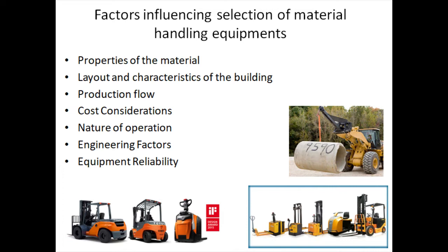Layout and characteristics of the building are also very important. A restricting factor is the availability of space for handling — low-level ceilings may preclude the use of hoists or cranes, and the presence of supporting columns in awkward places can limit the size of material handling equipment. If the building is multi-storied, chutes or ramps for industrial trucks may be used. The layout itself will indicate the type of production operation and can indicate items of equipment that will be more suitable. Floor capacity also helps in selecting the best material handling equipment.